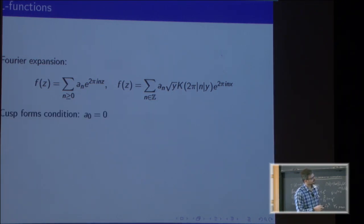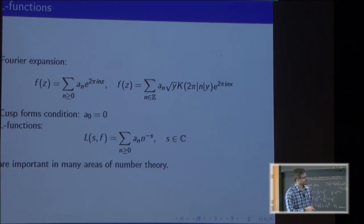The one on the right is for a Maass form and K is some Bessel function. If a_0 is zero, it's a cusp form. In both cases, we can form an L function. These are, as we saw, important in many areas of number theory.